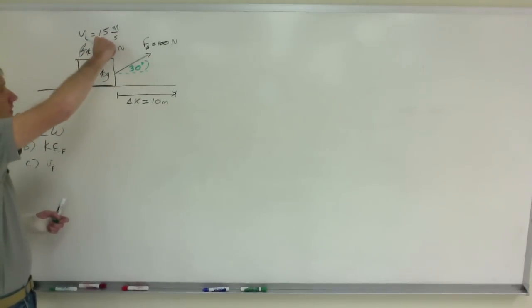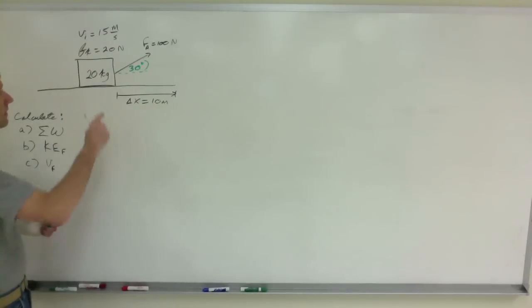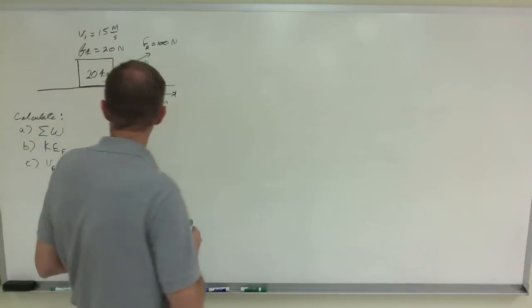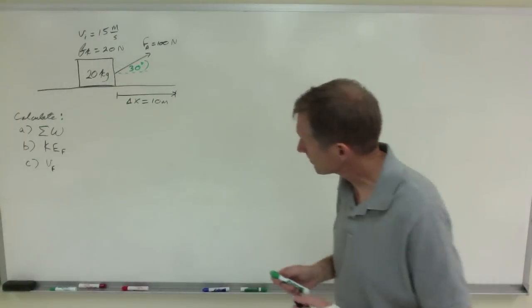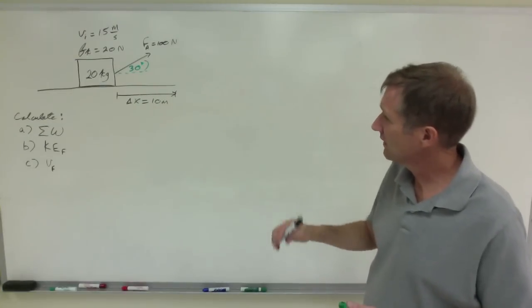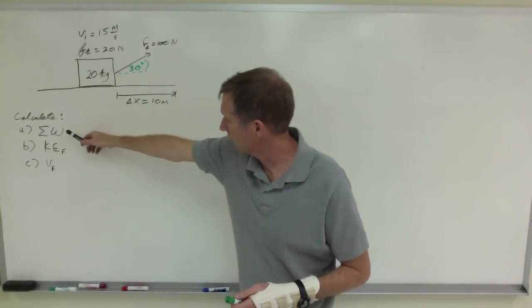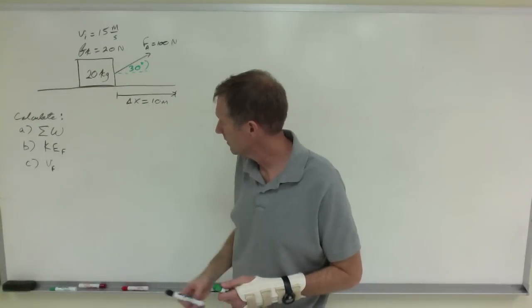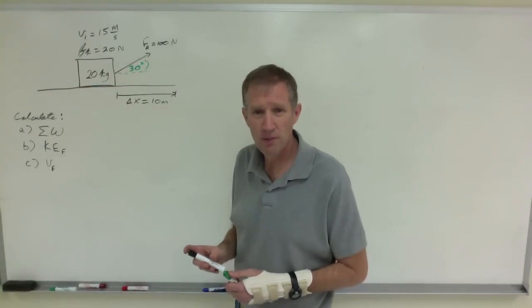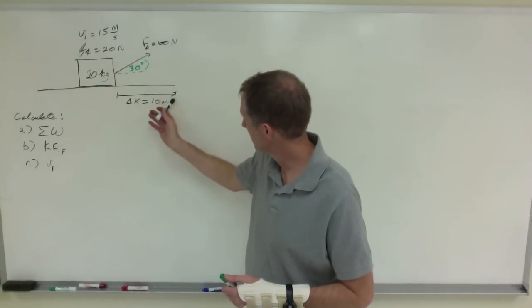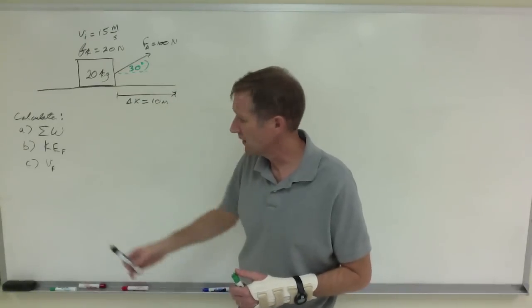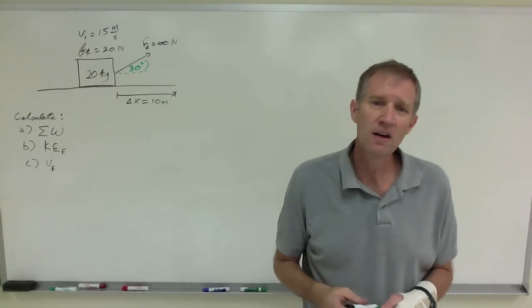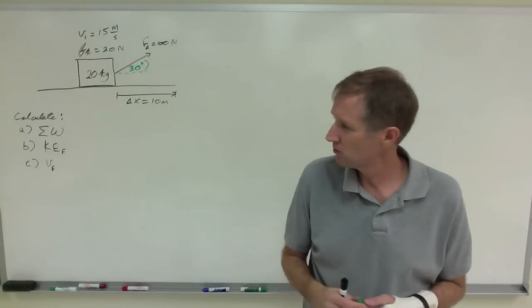When it's being pulled it was already initially moving at 15 meters per second and there is a force of kinetic friction acting against it of 20 newtons. So the goal is to calculate the amount of work done on the box, the final kinetic energy of the box that is at 10 meters, and then the final velocity using the idea of energy not kinematics to solve this.